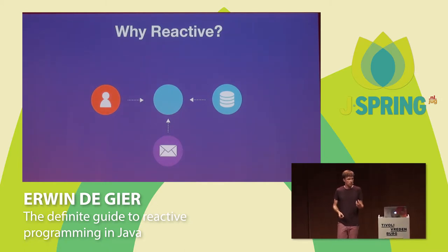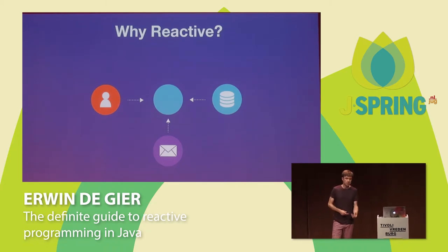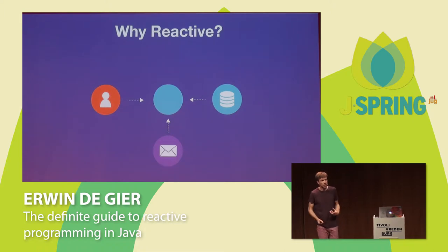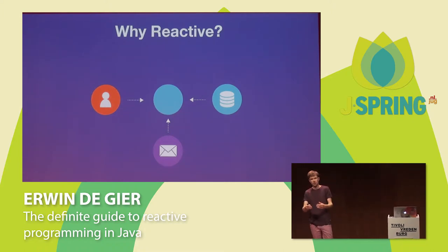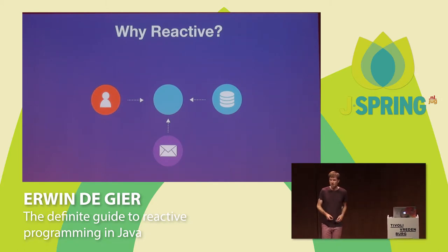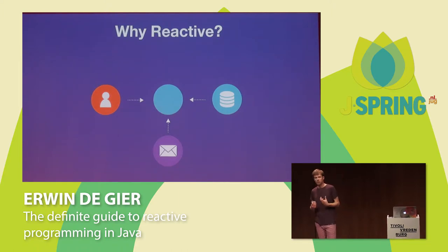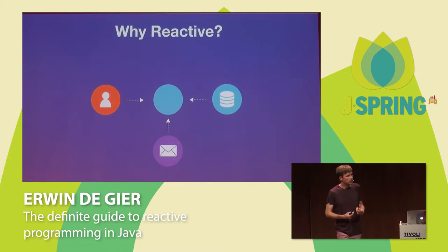Well, if you build an application, then usually your application has interactions with the outside world. You rarely build something that is isolated. And a lot of these interactions you want to react upon. So say for instance, a user clicks a button — you want to do something with that button click — or your system receives a message. But even if you send a request to a database or a request to an external service, the result that comes back is something that you want to react upon. So modeling your application in a reactive way makes a lot of sense.